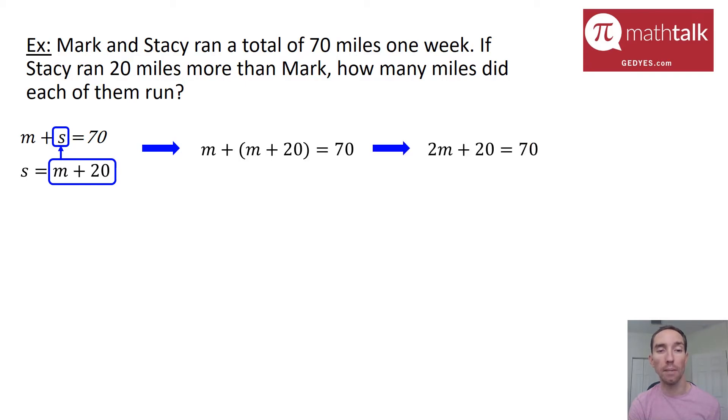Now I have an equation with just one variable. I can go ahead and solve that for that one variable. Simplifying M plus M equals 2M plus the 20 equals 70. I'm going to subtract 20 from both sides. That leaves me with 2M equals 50. Then I can divide both sides by 2 and I get M equals 25. So Mark's mileage is 25 miles.